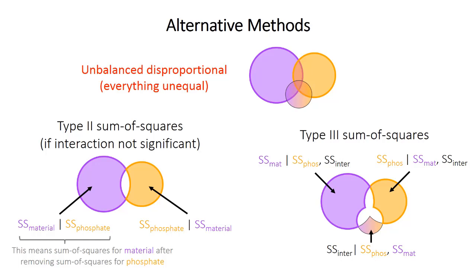If you have an unbalanced design, beware of standard R ANOVA functions and use alternatives with either Type 2 or Type 3 sum of squares, or use something called the general linear model, which will be covered in a future video.